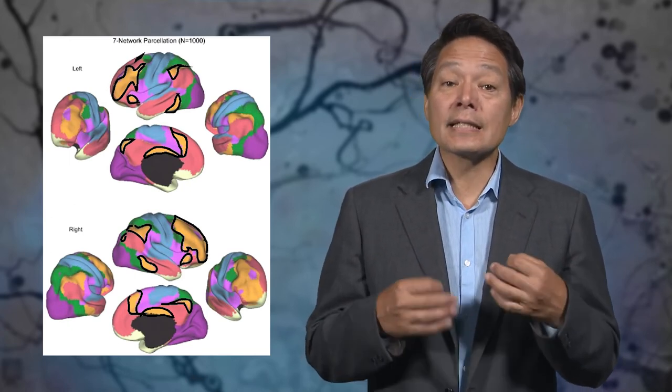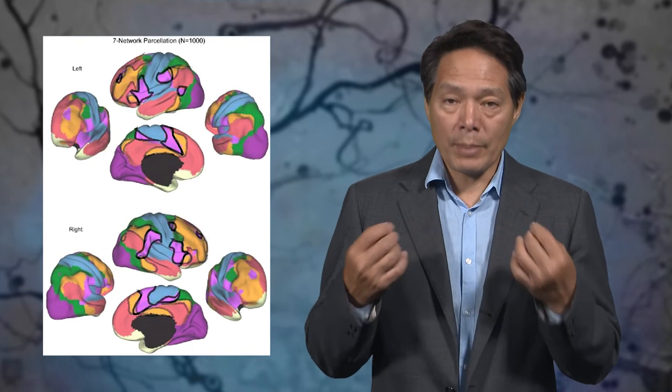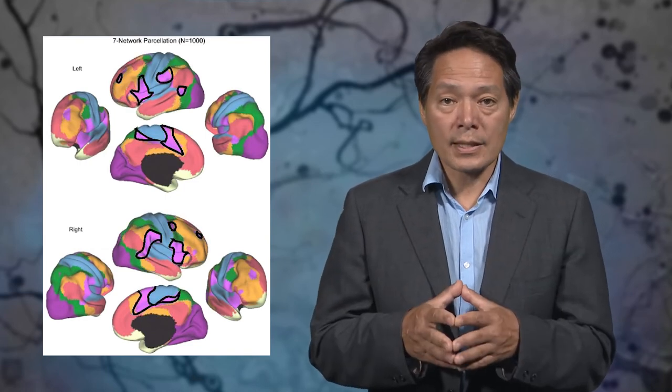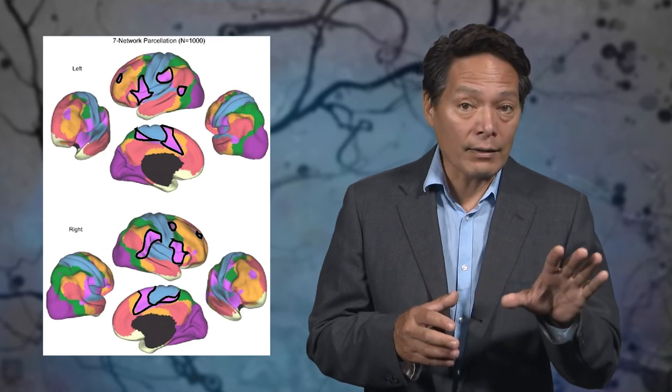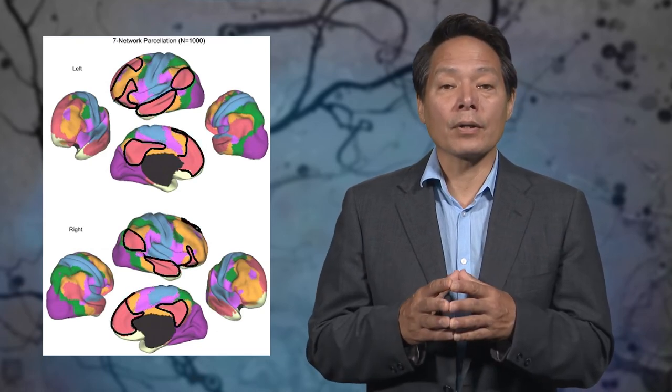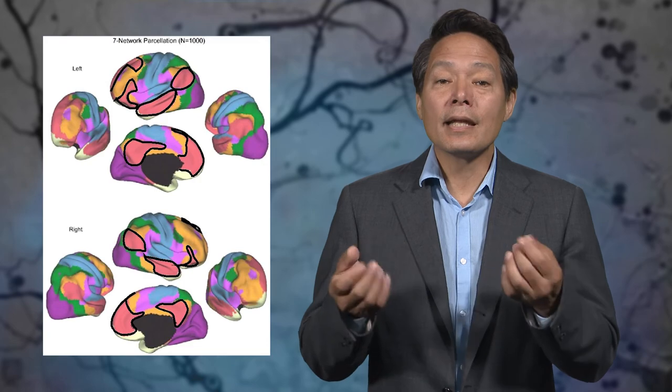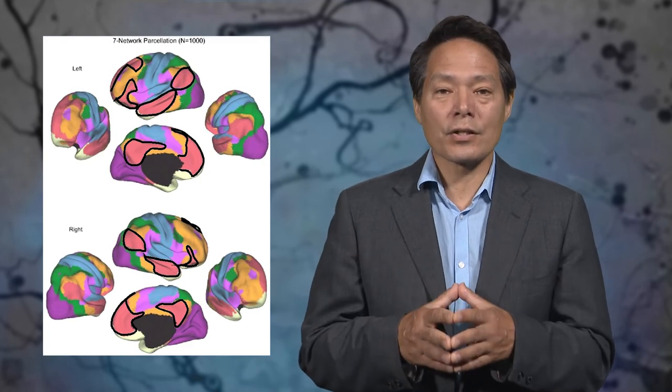These volitional circuits exist in contradistinction to apparently non-volitional ones, such as the ventral attentional or exogenous attentional network, the violet areas, or the default mode network, the red areas. In the next section, we'll dissect the volitional circuits in a bit more detail.